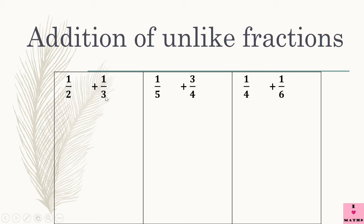These two fractions are unlike fractions since they have different denominators. Now we all know how to add like fractions. Suppose we are able to convert these two fractions to like fractions, then it will become very easy for us to add them. So how should we convert them to like fractions? If we multiply the numerator and the denominator of the first fraction by the denominator of the second fraction, we will get an equivalent fraction which will be equal to the original fraction.